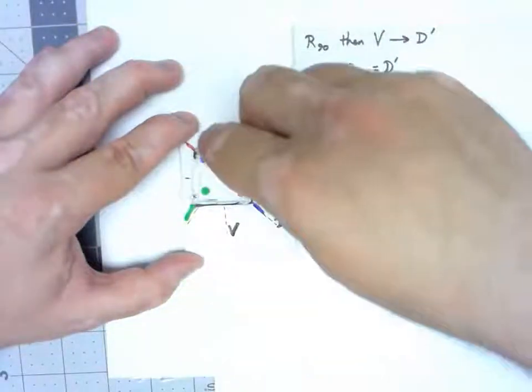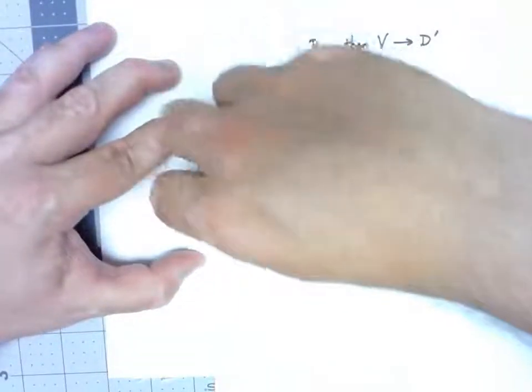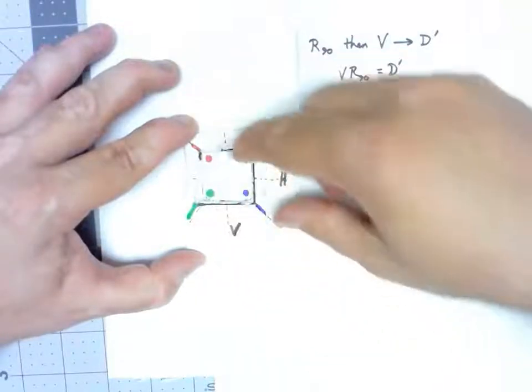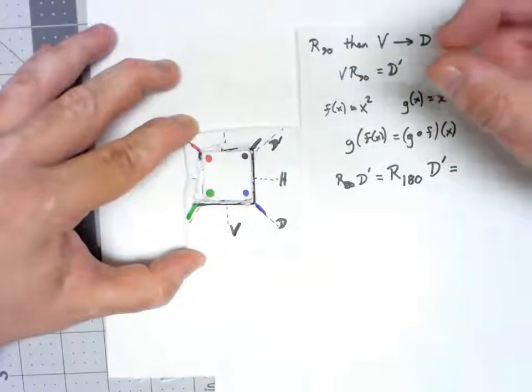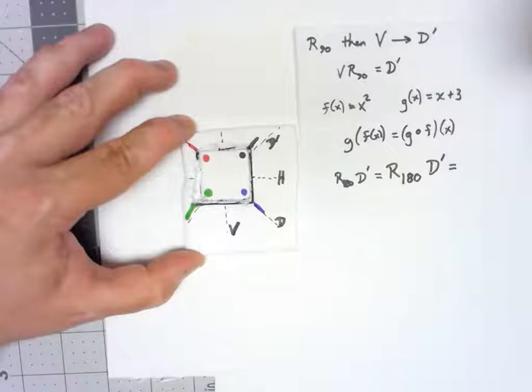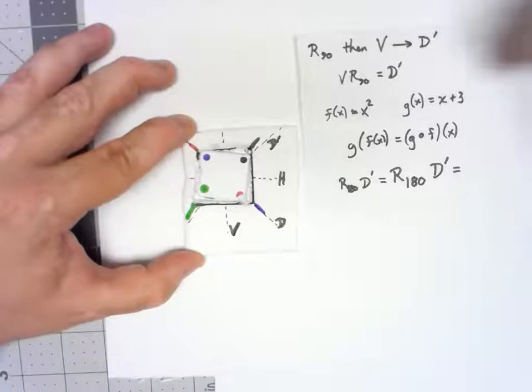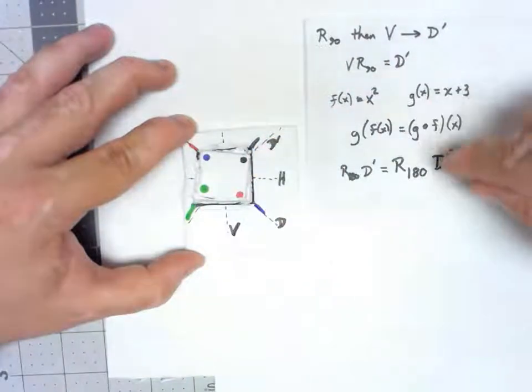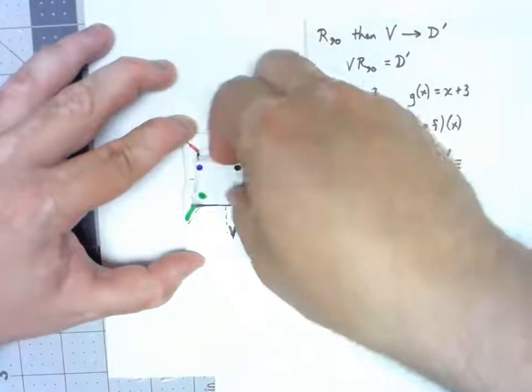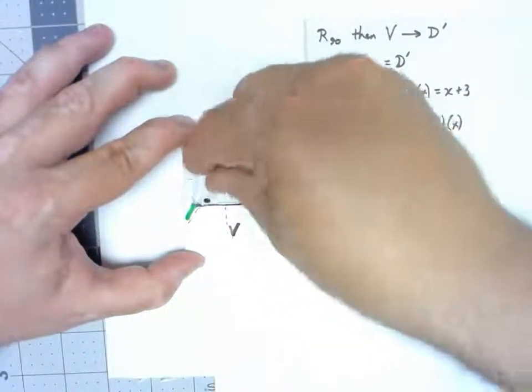Flipping across this diagonal means that we pick it up. This is the starting position. So, flip. Then we go ahead and rotate by 180. One, two, 180 puts it there.